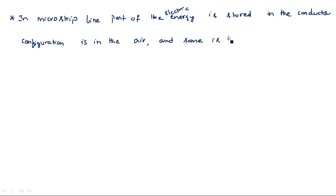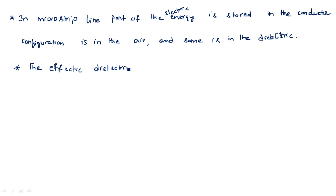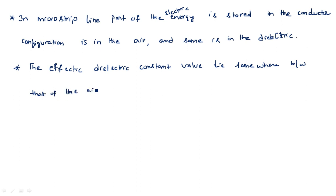Some energy is in the form of dielectric material. So the effective dielectric constant for waves on the transmission line will lie somewhere between that of the air and that of the dielectric.